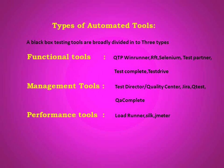First of all, we need to discuss the types of tools available in the market. We mainly have functional tools, management tools, and performance tools. Functional tools include QTP, WinRunner, RFT, Selenium, Test Partner, Test Complete, and Test Drive. Management tools include Test Director, Quality Center, JIRA, and QTest. Non-functional or performance tools include LoadRunner, Silk, and Diameter.